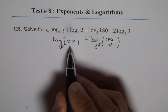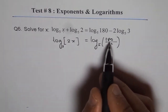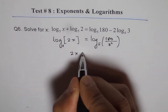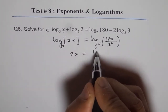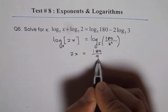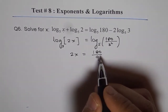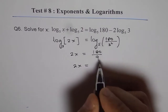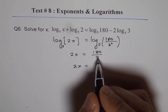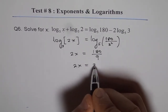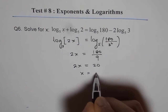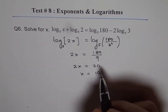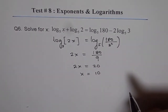Now, comparing these two, 2x should be equal to 180 over 3 squared. So 2x equals 180 over 9, which means 2x equals 20. Therefore, x equals 10. That is the solution for the given equation.